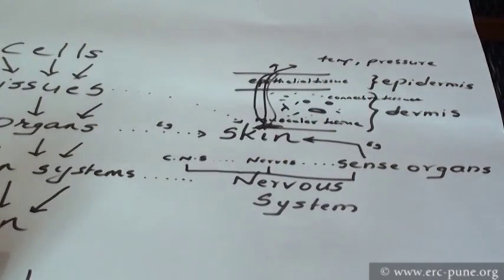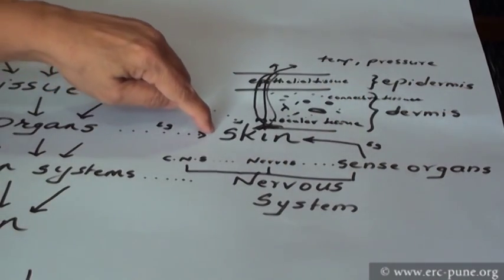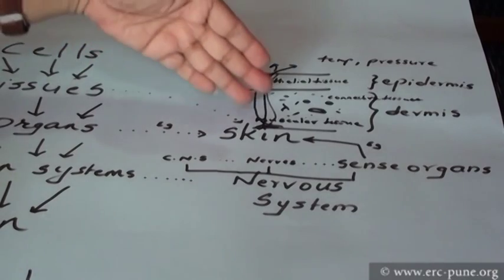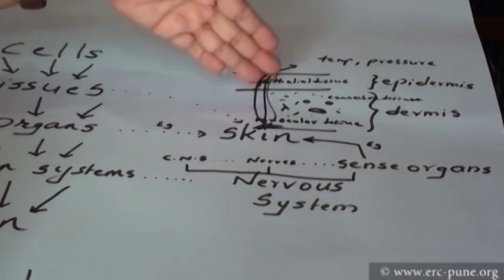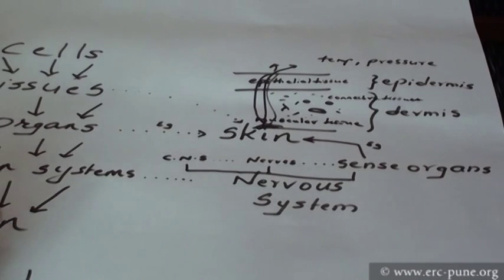Tissues present in the skin. Now you must have understood why I have taken skin as the example because it has a lot of these tissues. In turn, we can see a lot of different kinds of cells over here. We have come to the basic, that is the cell.